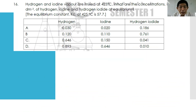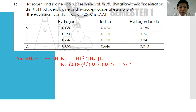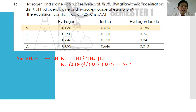Number sixteen: hydrogen and iodine vapor are mixed at 425°C. You must calculate Kc for each option — for H₂ + I₂ → 2HI, Kc = [HI]² / ([H₂] × [I₂]). Calculating each option, the suitable Kc of 57.7 is obtained when [H₂] = 0.03, [I₂] = 0.02, and [HI] = 0.186. You can check all options A, B, C, D — there is no shortcut but to calculate each one.